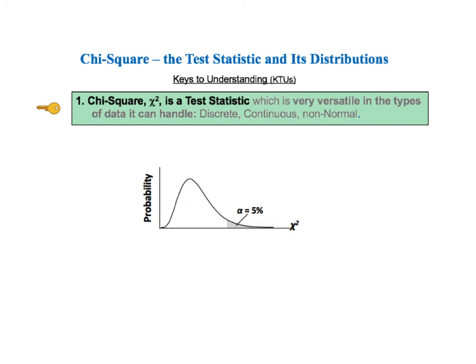Key to understanding number 1 starts by saying that chi-square is a test statistic — sometimes called chi-squared — like Z, T, and F. A test statistic is one which has a distribution with known probabilities for every value of the test statistic. So for any value of chi-square on the horizontal axis, there is a known probability of that value occurring. More importantly, we can calculate the area under the curve to the left or right of any value. Alpha, the significance level in hypothesis testing, is a cumulative probability plotted as an area under the curve of the chi-square distribution. The p-value is also a cumulative probability plotted as an area under the curve.